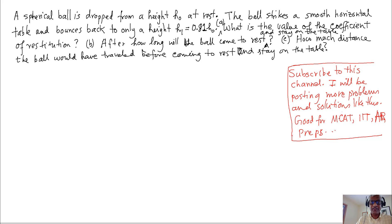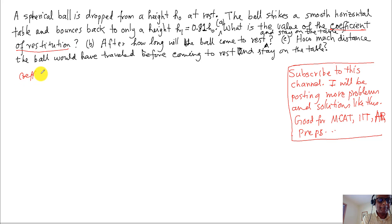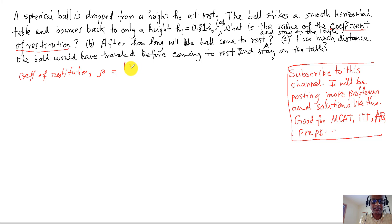Hello, welcome to a really interesting problem. This is very familiar to a lot of people — it's a problem in elastic collision. There is a term here: coefficient of restitution. You need to know the definition of that in order to proceed. The coefficient of restitution — I'm going to use the symbol rho for it — is a ratio of relative velocity after collision divided by relative velocity before collision.